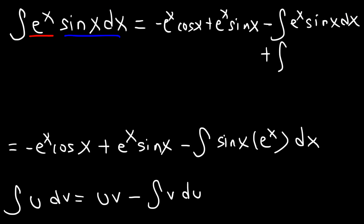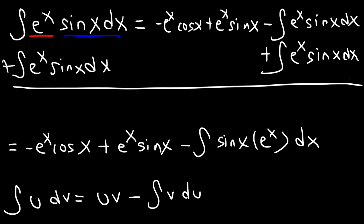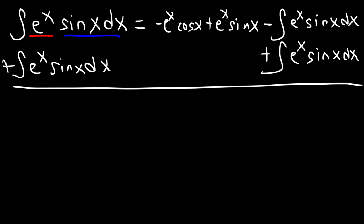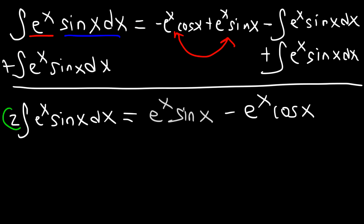I'm going to add this term to both sides of the equation. On the left side, we get 2 times the integral of e to the x sine x dx. Switching the order so the positive term comes first, that equals e to the x sine x minus e to the x cosine x. To isolate the integral, I'm going to multiply every term by one half, so the 2 and one half cancel.